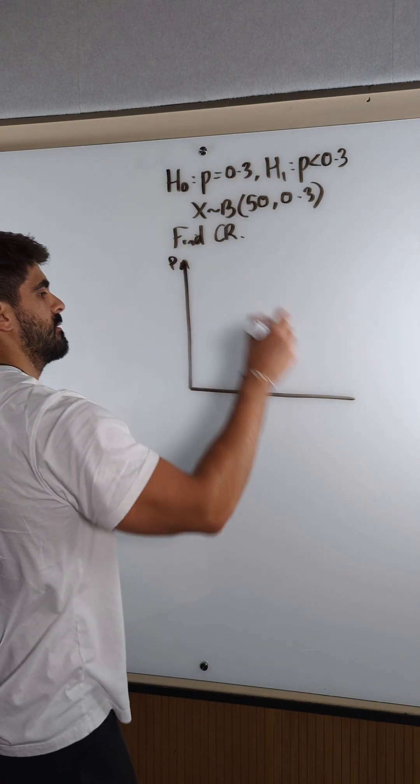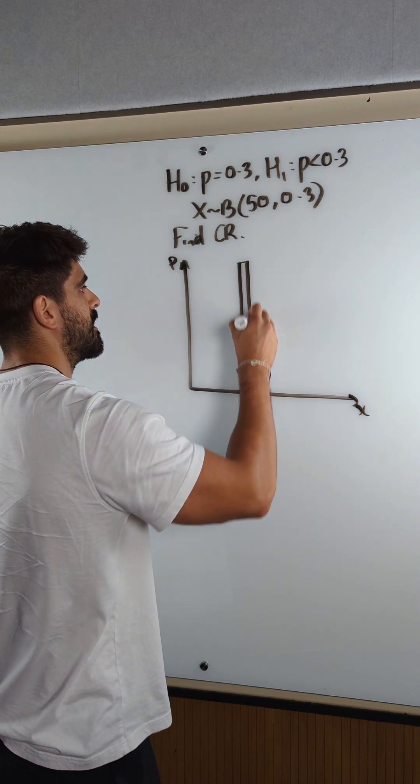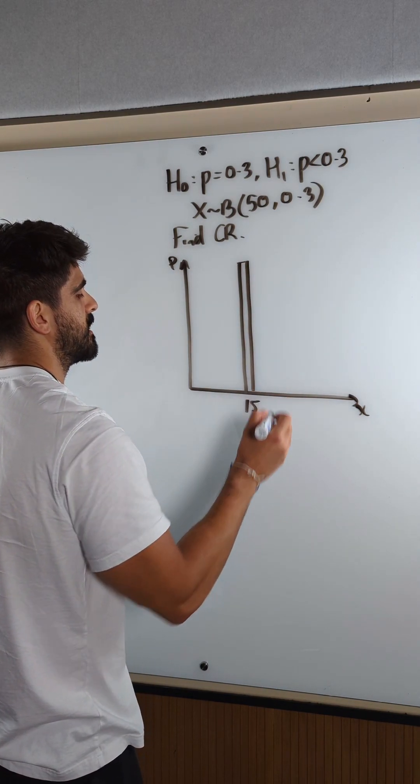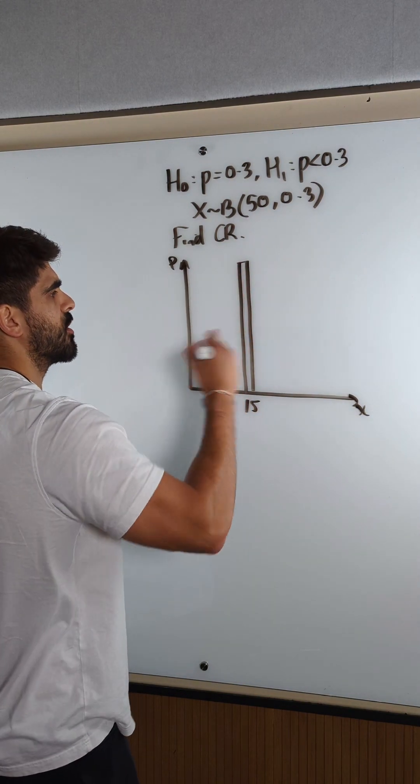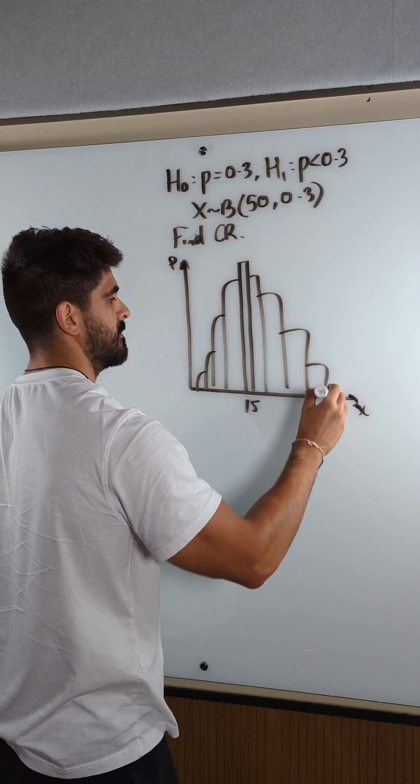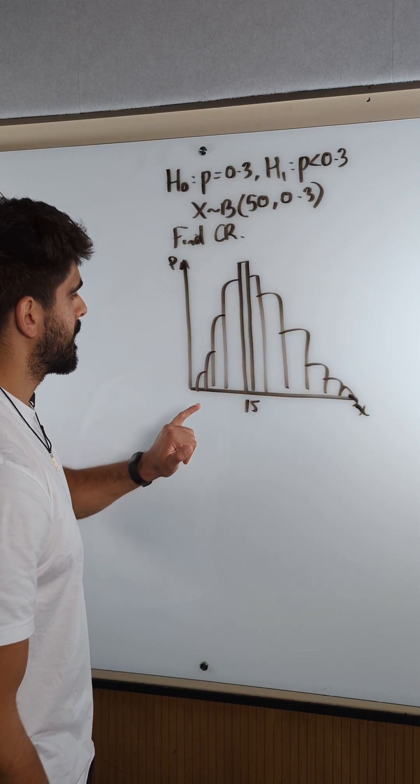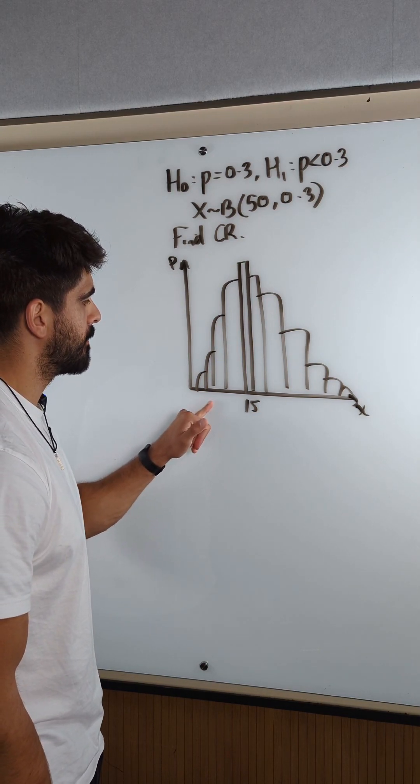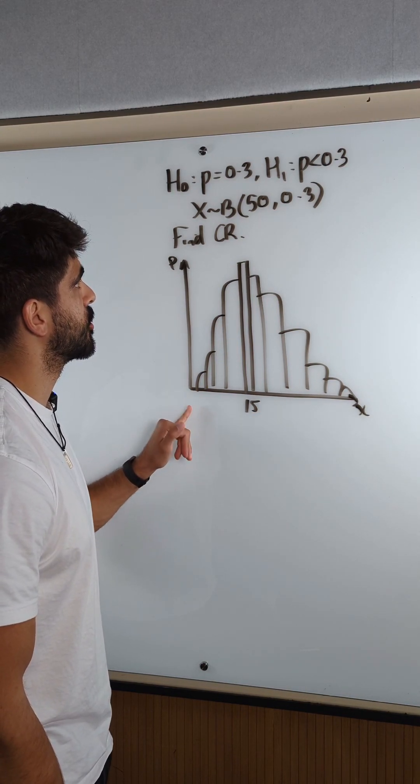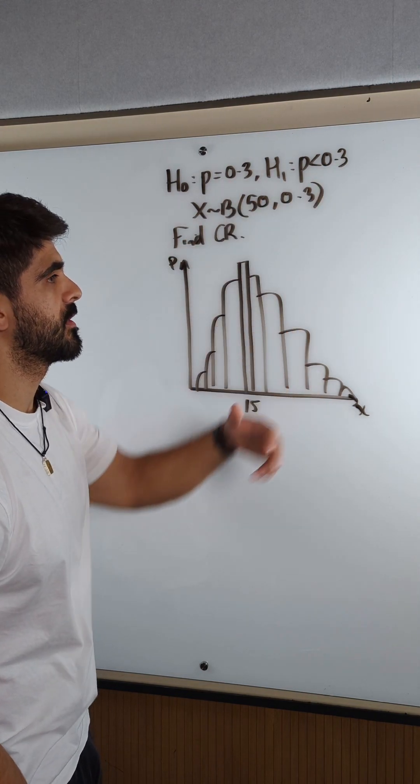So remember this is a probability and these are your x values. It's a bar chart, so the highest probability would have the outcome of 15. Now the bars would be separate, but it's just a sketch, so I just keep them together. Now what we're saying is, how few outcomes would you need in order to conclude that this probability is too high? It should be less. So we draw the boundary.